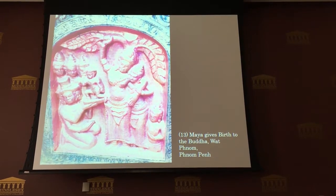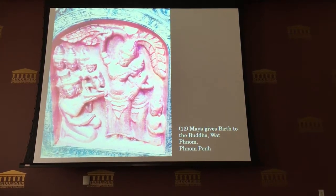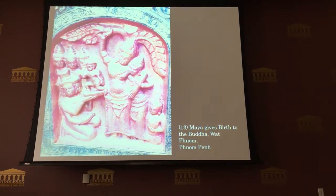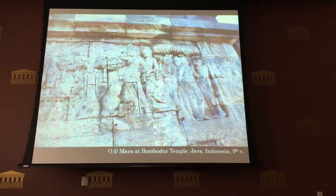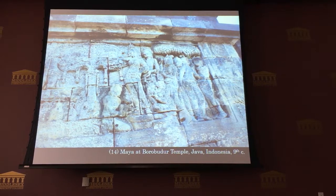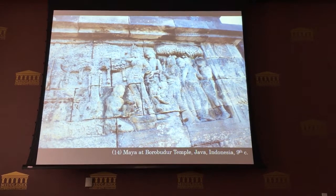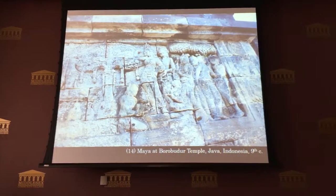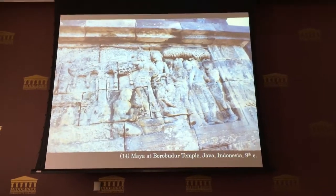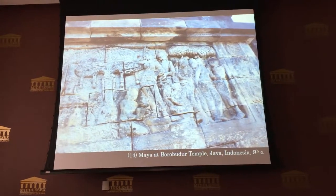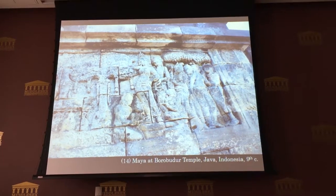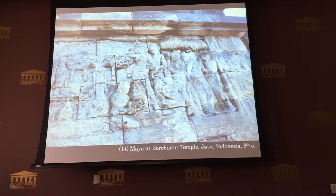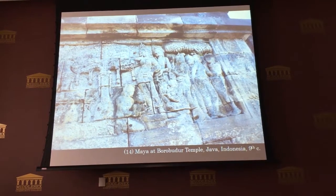I show this to students to try to show Maya as an example of localization. Here's another example of her — maybe a little harder to see, but she's actually up here grabbing onto this sala tree. You can kind of see her hip is tipped here. So I sort of knew what I was about to see — the story of the Buddha is beginning. And this is the Borobudur Temple in Indonesia.